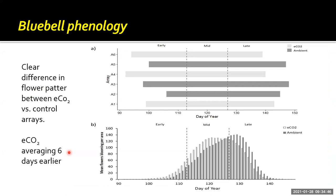This data, recently produced by Liam, is already showing a response in bluebells — they're flowering earlier in the elevated CO2 arrays. On average, it's about six days earlier in the elevated CO2 treatments. Interestingly, the duration of flowering isn't changing, so it just means flower production is pushed earlier into the season. The midpoint of the flowering period between first flowering and plant senescence is also six days forward. So there's a clear shift, and we're trying to understand exactly what might be driving that.